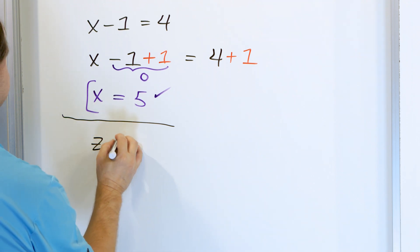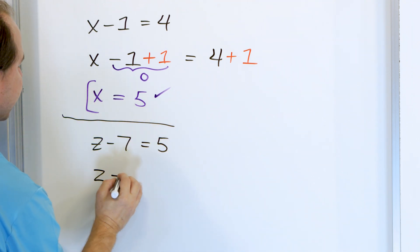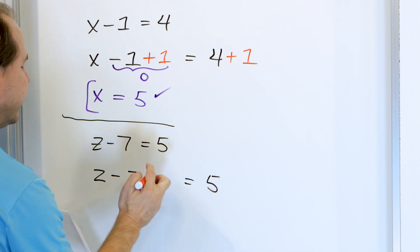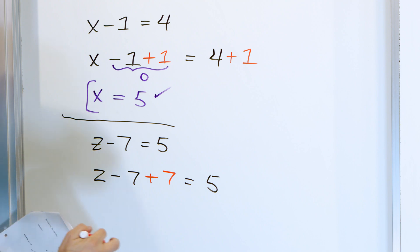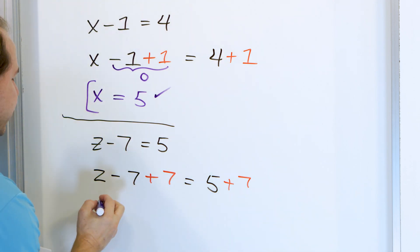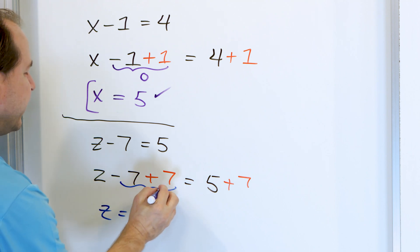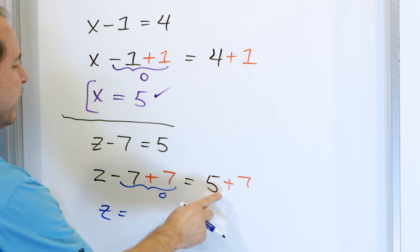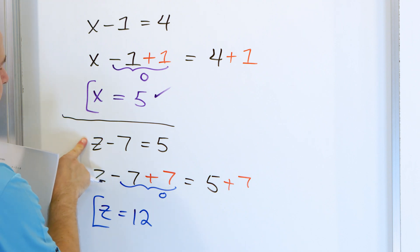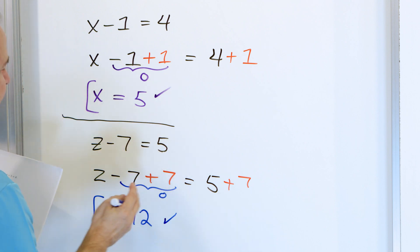What about z minus 7 equals 5? Let me rewrite it: z minus 7 equals 5. I want to get z by itself. I'm subtracting 7, so I'm going to undo that with the opposite — adding 7. I have to do it to both sides, otherwise the thing is not balanced and it won't be true anymore. Negative 7 plus 7 is 0, so it disappears and z is the only thing left. What is 7 plus 5? 12. That's the answer. Check it: 12 minus 7 is equal to 5. Verified.